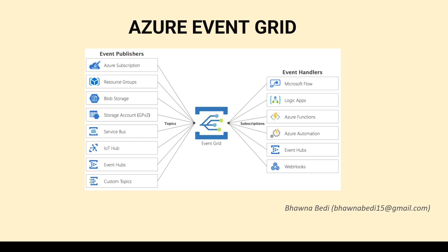On the right-hand side you have multiple subscriptions — these are basically actions. Whenever a file comes into blob storage, that is my publish event, and based on this event I want to trigger something. I might want to trigger a Logic App workflow, a code written in Azure Functions, Event Hub, or any other thing like a webhook. These are called event handlers because they handle the way your event will respond. Your event is when the file comes into blob storage, and event handlers handle the output generated as the outcome of that event.